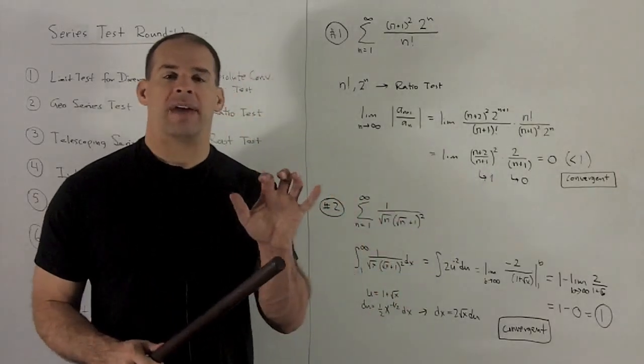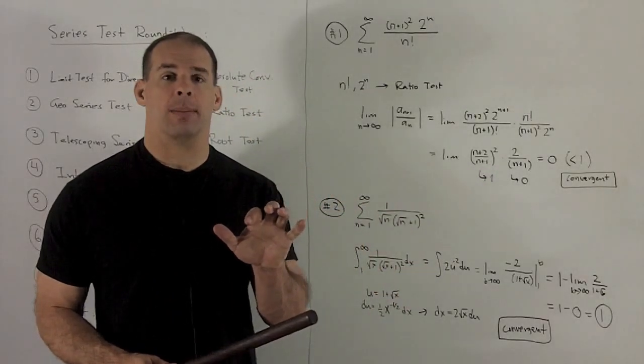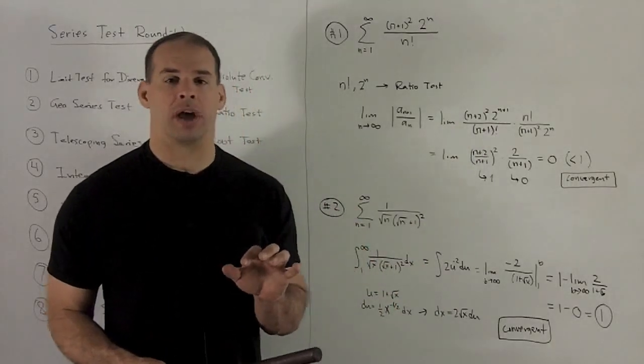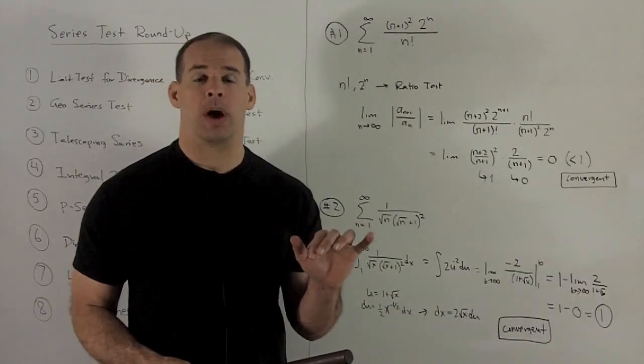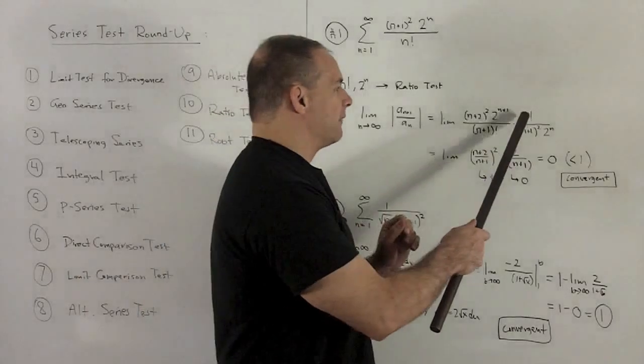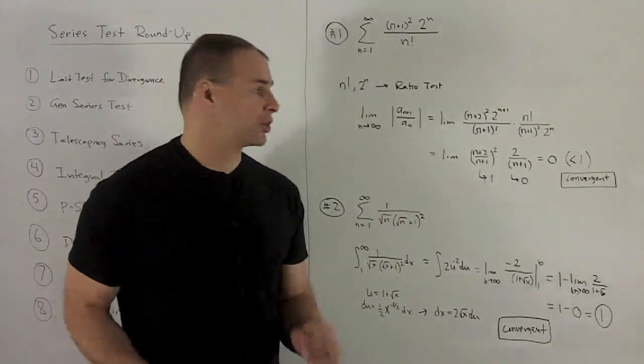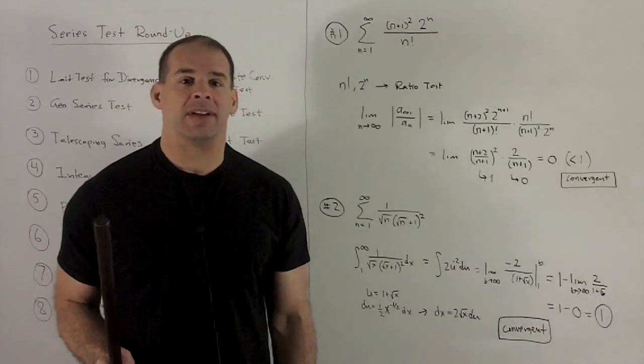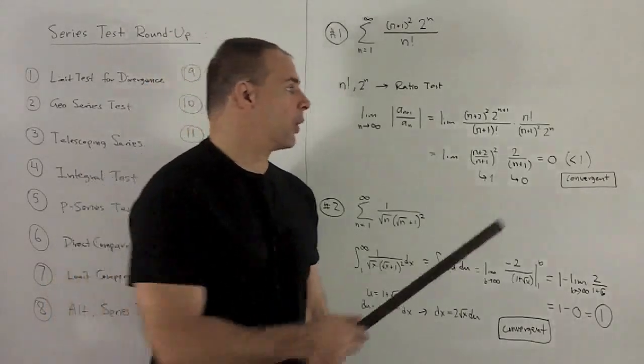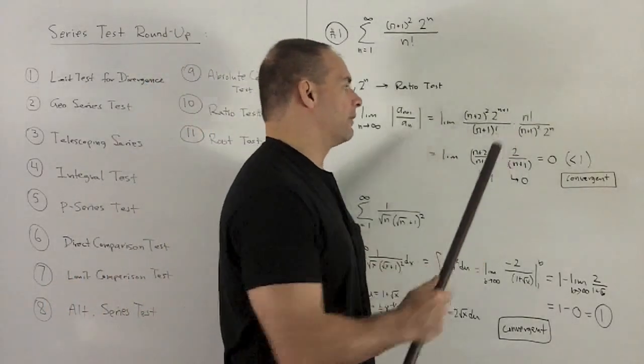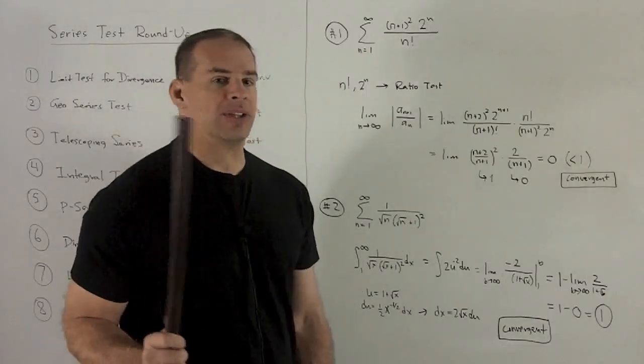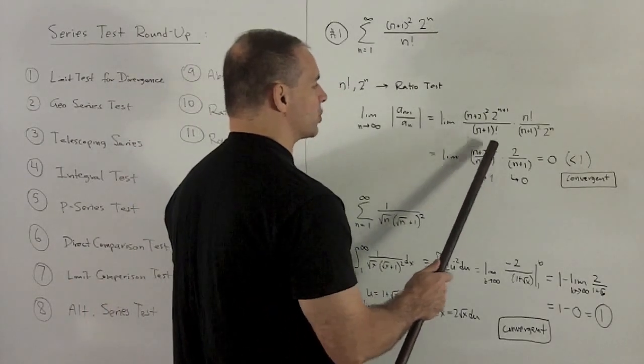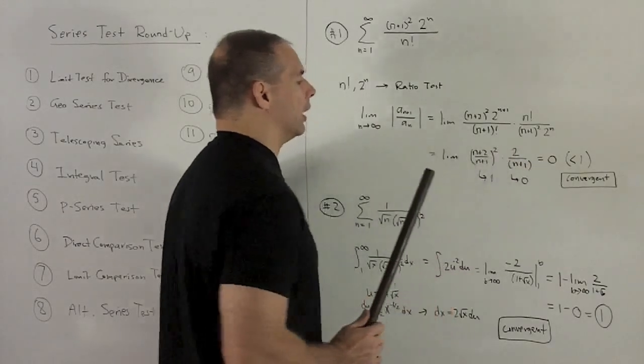Well remember, n factorial is the product of all numbers from 1 to n. (n+1) factorial is going to be the product of all numbers from 1 to n+1. So all the terms in my n factorial are going to cancel out in pairs with the terms in the bottom. The only thing that will survive is an n+1 because there's no n+1 term in my n factorial. So in summary, what are we looking at? Limit [(n+2)/(n+1)]² · 2/(n+1).